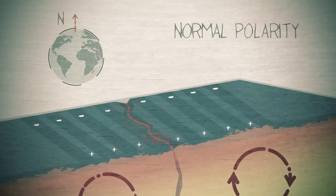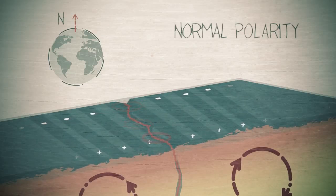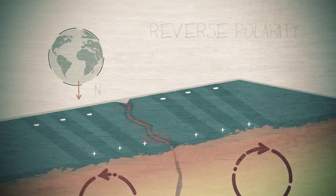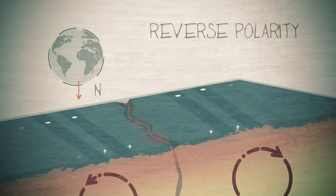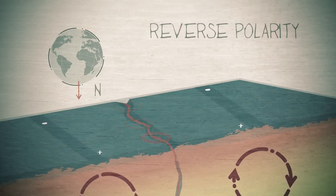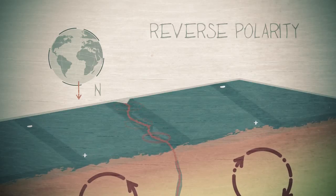Magma solidifies locking in the magnetism. New magma forms as the plates move apart. The magnetic field reverses. More magma solidifies locking in the reversed polarity and so on creating a pattern that repeats each side of the ridge.